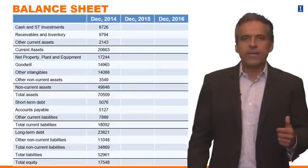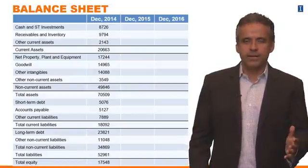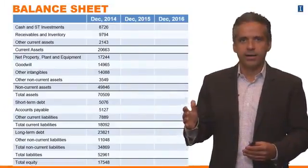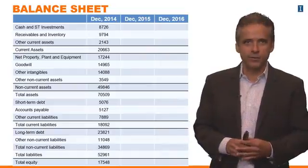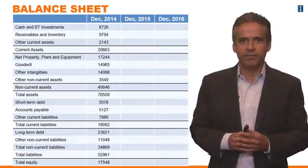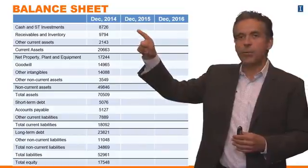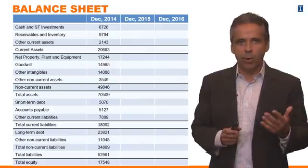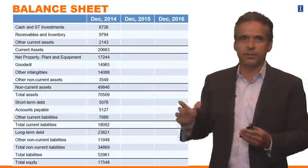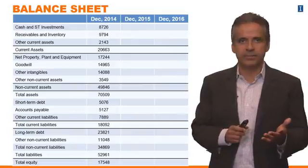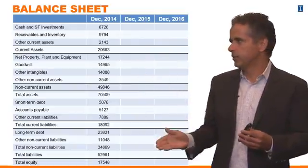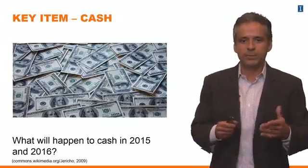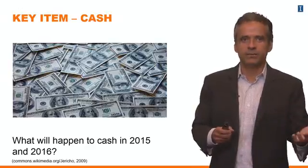As we just discussed, now we need to think about the balance sheet. I know it might look scary with all these items here. You might think it's going to take a long time to go through all of these — how do we forecast all of these? The good news is that for the question we are asking ourselves, the most important item to look at is actually the first one: cash and short-term investment. What is going to happen to cash in 2015 and 2016?